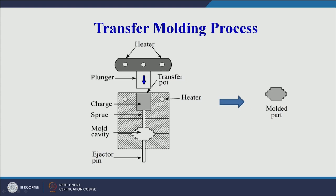Once the process is complete, the top half moves up. The product remains in the bottom half, and an ejector pin gives a slight tap on the molded part to push it out. The molded part has been produced by the transfer molding process. There are three to four important steps involved.